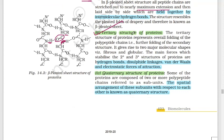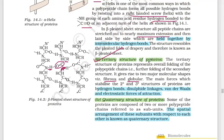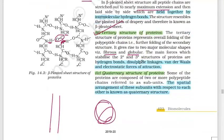The tertiary structure of proteins is more complex, involving additional folding and twisting of the polypeptide. This gives rise to either fibrous type or globular type proteins. The tertiary structure is stabilized by hydrogen bonds, disulfide linkages, van der Waals forces, and electrostatic forces of attraction. These forces stabilize both secondary and tertiary structures of proteins.